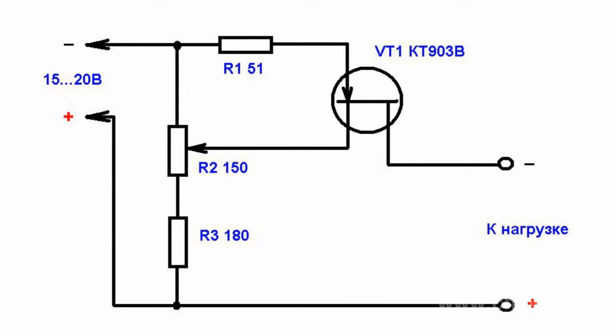The input power supply voltage ranges from 15 to 20 V. Potentiometer R2 sets the required voltage applied across the load.